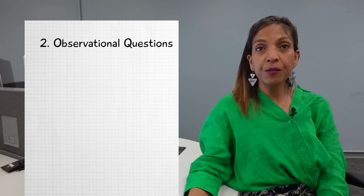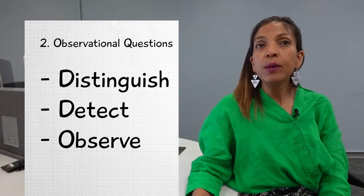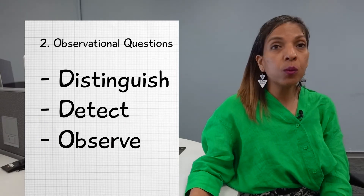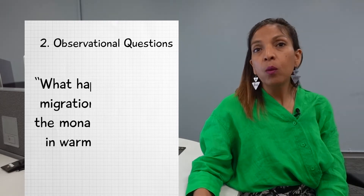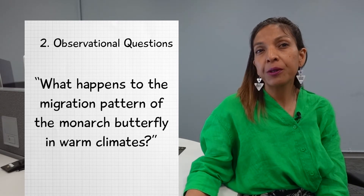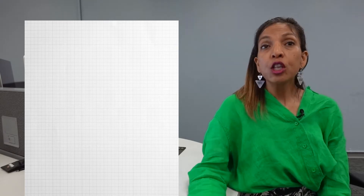Second, observational questions. They distinguish, detect, or observe what happens. For example: what happens to the migration pattern of the monarch butterfly in warm climates?